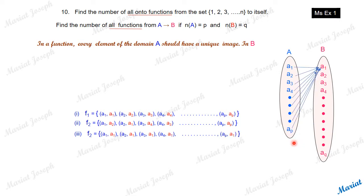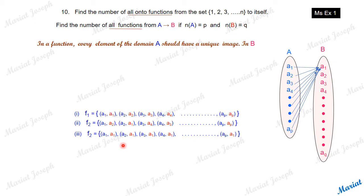Let's see another one. Can every element be related to A1? That is (A1, A1), (A2, A1), (A3, A1), etc. Will it also be a function? Yes, of course. This is a function because every element in the domain — say A4 — has exactly one image; A1 is the image. A3 also has only one image: A1. Even this is a function. So many, many more functions we may be able to write, but how many? That is the question.